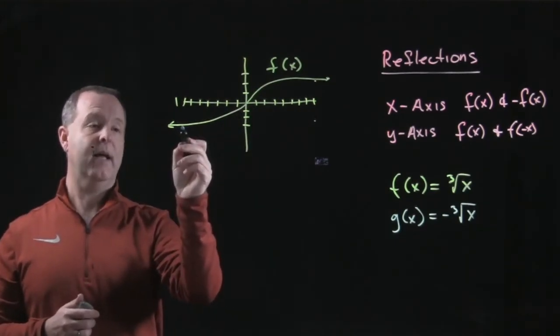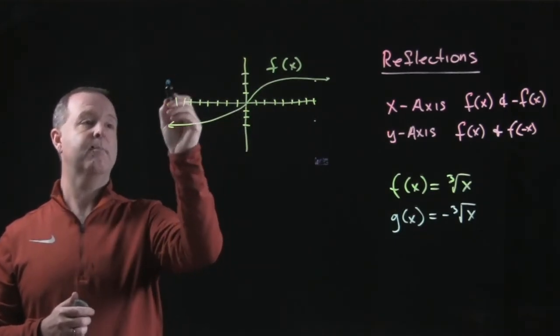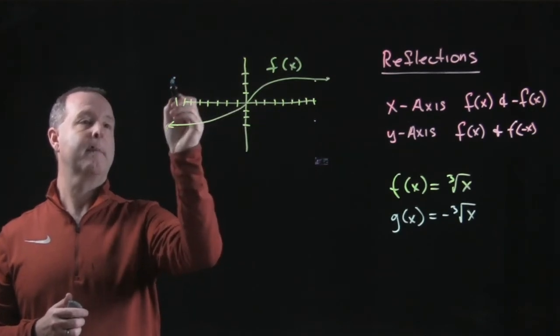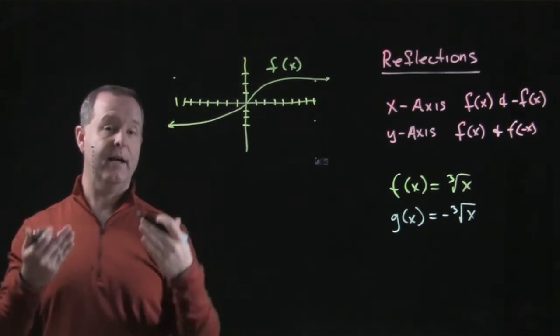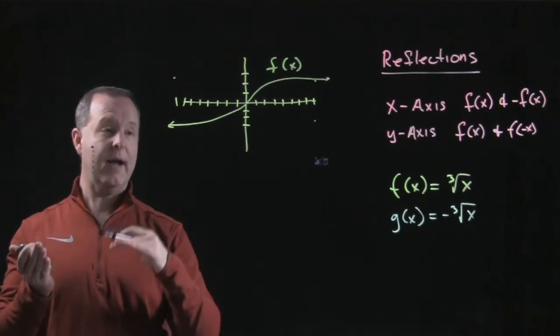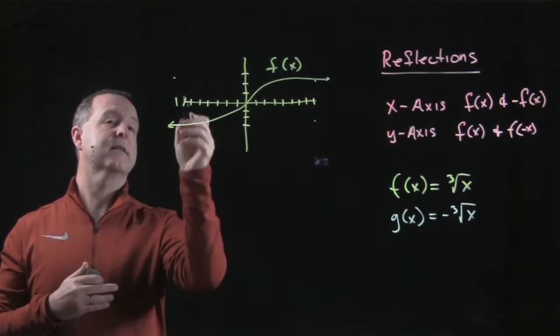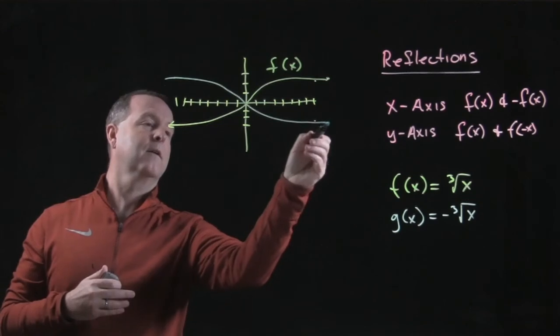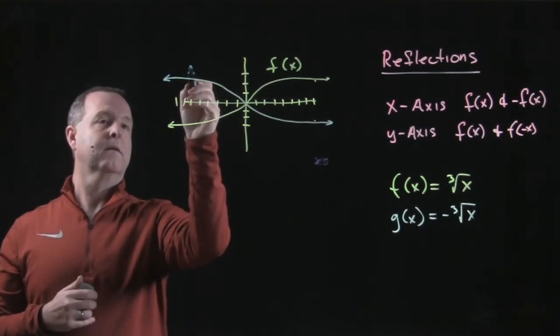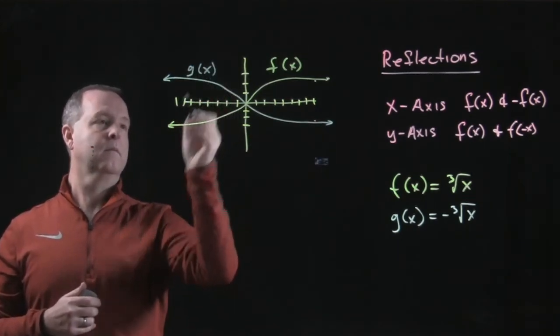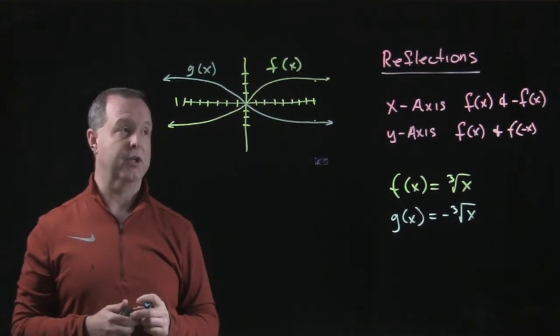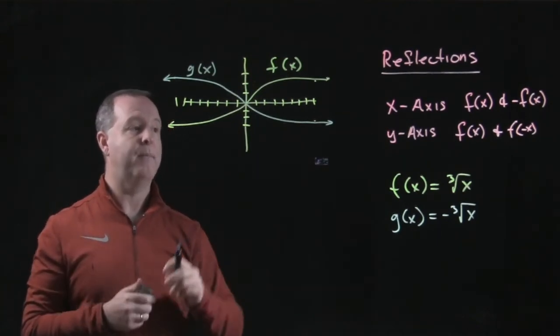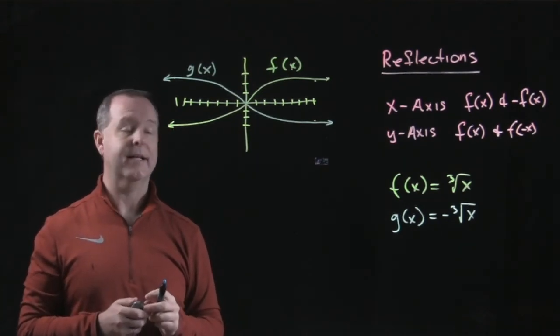The point (-8,-2) becomes (-8,2). I just reflect every point up or down about the x-axis. And so there's my g(x) function reflected about the x-axis.